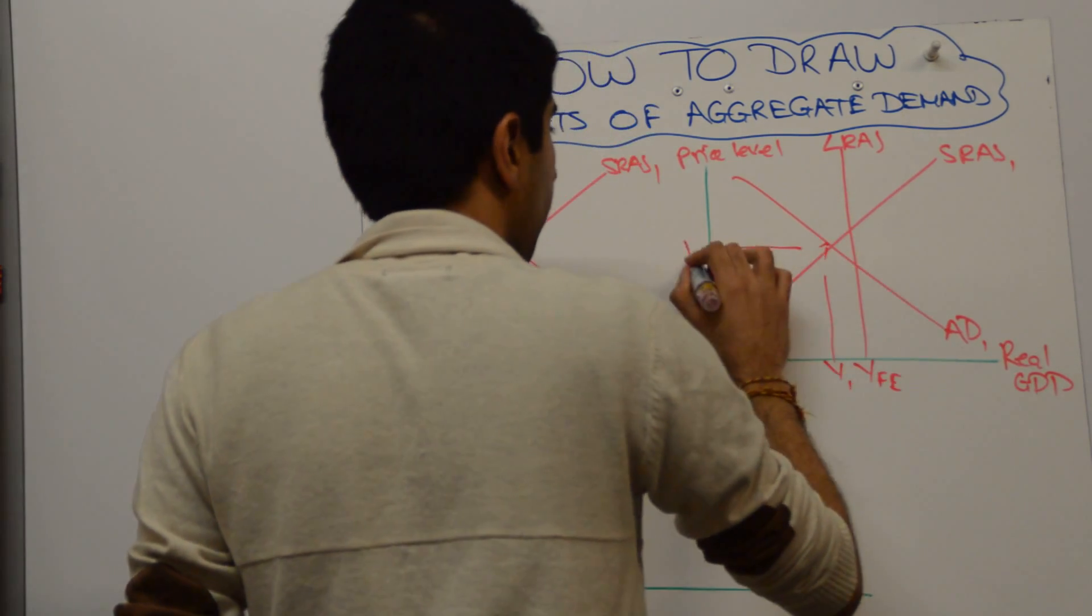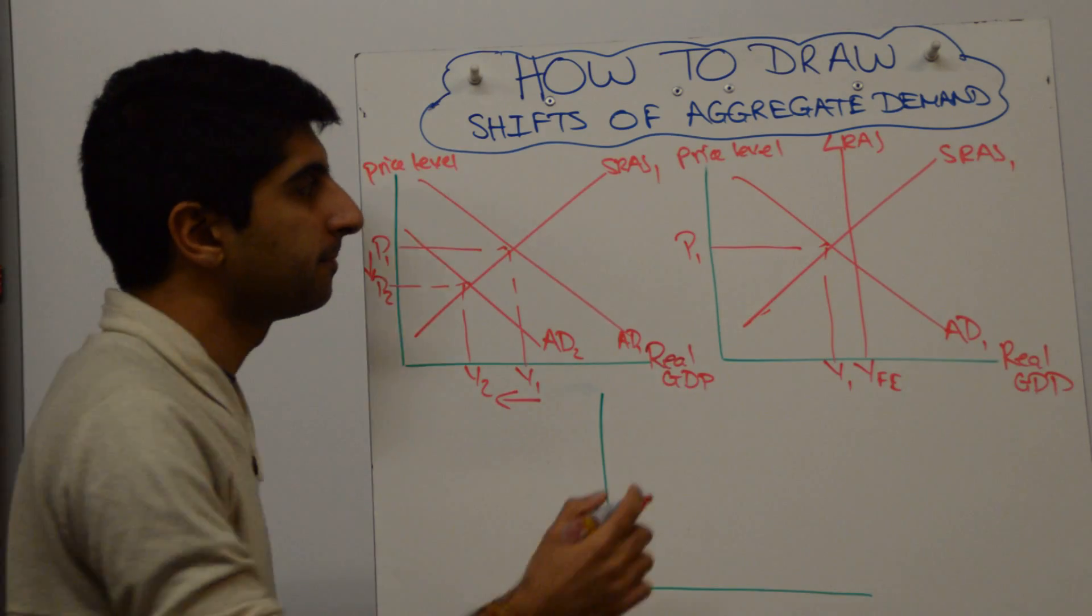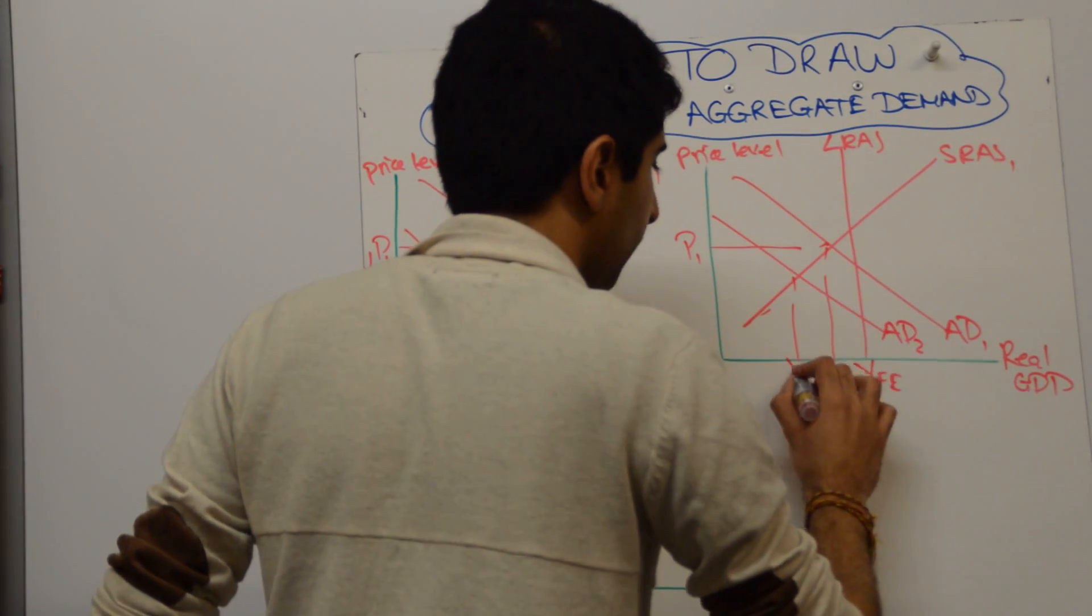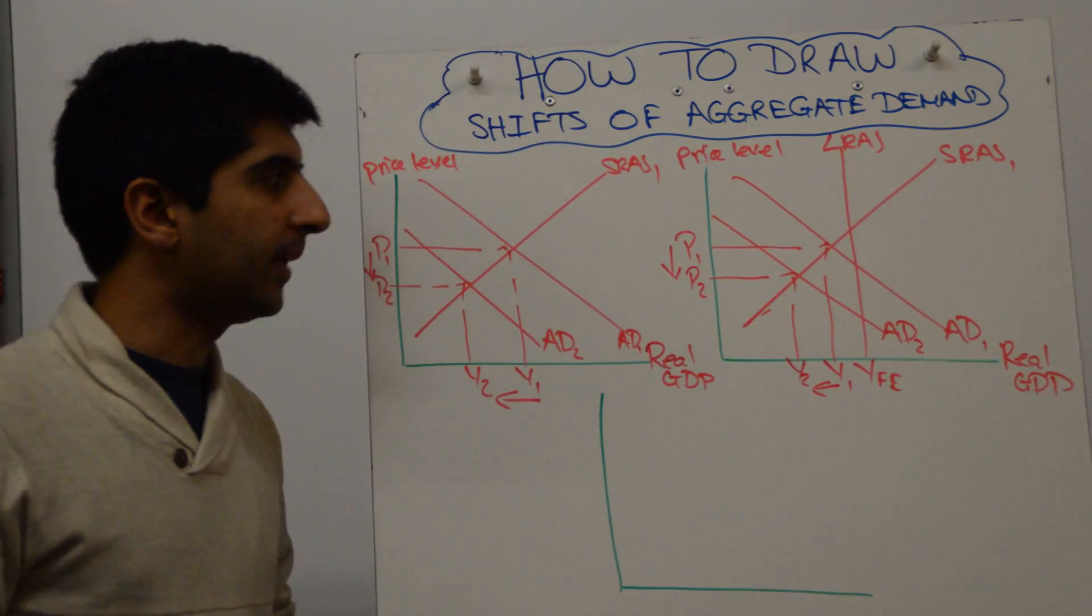So initially equilibrium is at Y1 and P1. And let's assume it's the same AD shift to the left. You would do it the same way.